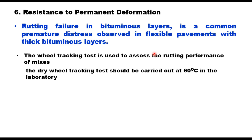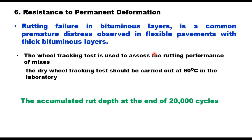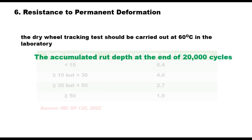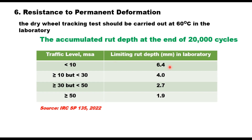IRC SP 135 suggests measurement of rut depth at 20,000 cycles. The test should be carried out on a 150 mm diameter cylindrical specimen compacted to 7% air voids, with a load of 700 N at a speed of 25 load cycles per minute. For a traffic level of less than 10 MSA, the maximum rut depth is 6.4 mm. For a traffic level of more than 50 MSA, it should be 1.9 mm, as per IRC SP 135:2022.